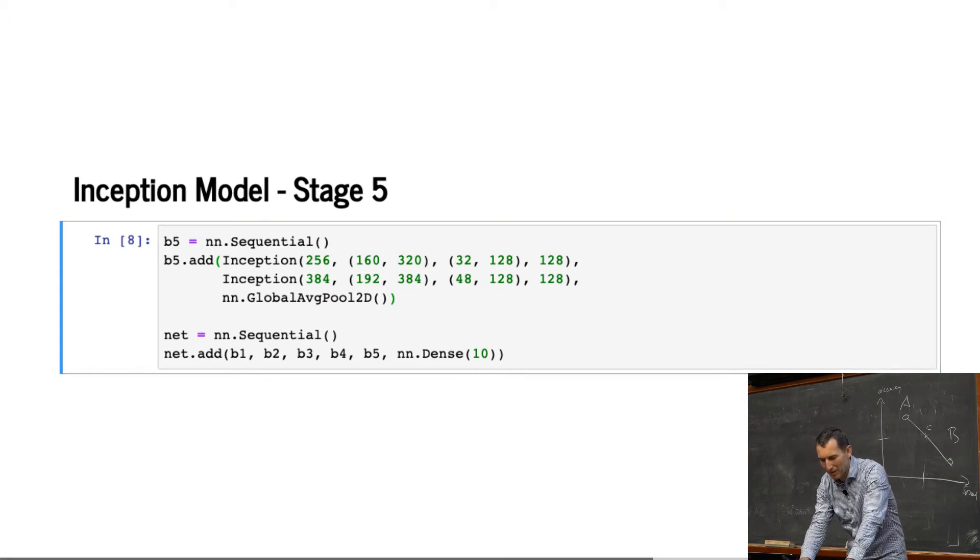So, now I need the last block. And that just adds two more inception stages with, in the end, then global average pooling. And so, now what I have is a network that I can create by having those five blocks. And then the end, just the dense layer with 10 dimensional output. Okay. There we go.